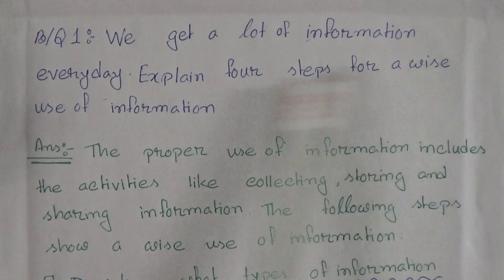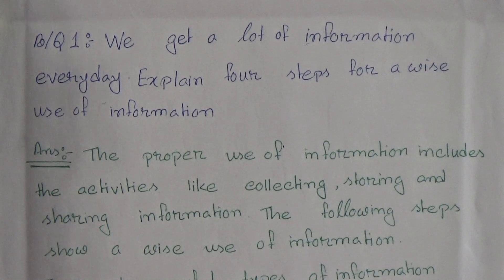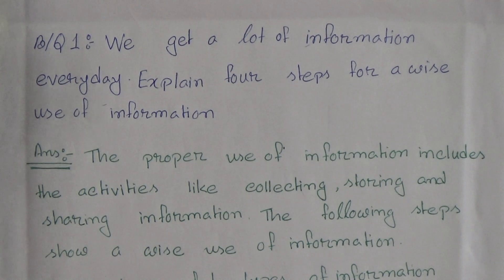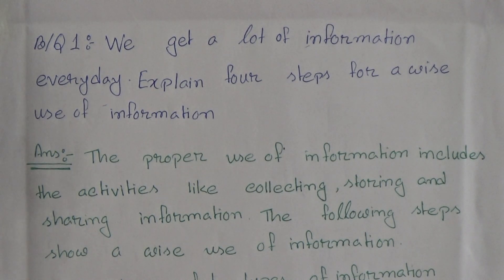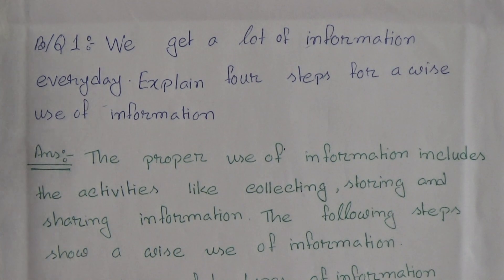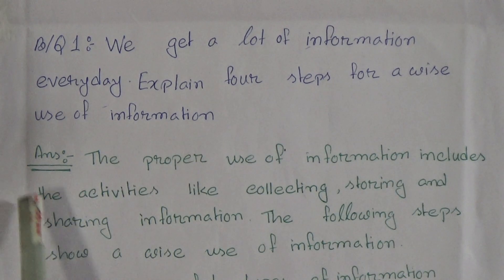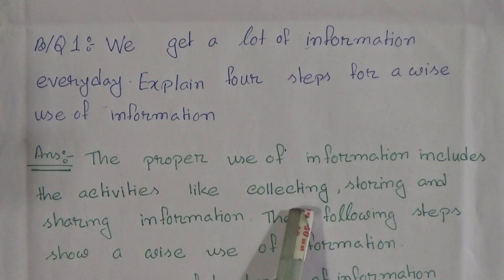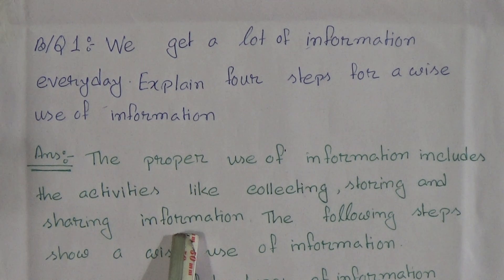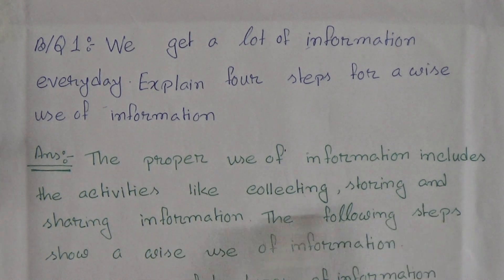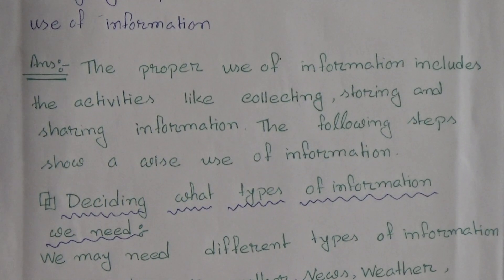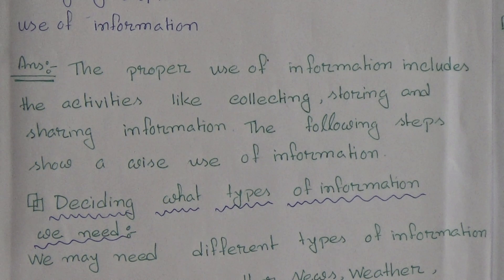Broad question number 1: We get a lot of information every day. Explain 4 steps for a wise use of information — that means how can we wisely use information in our daily life. Answer: The proper use of information includes the activities of collecting, storing, and sharing information. The following steps show a wise use of information in our daily life.